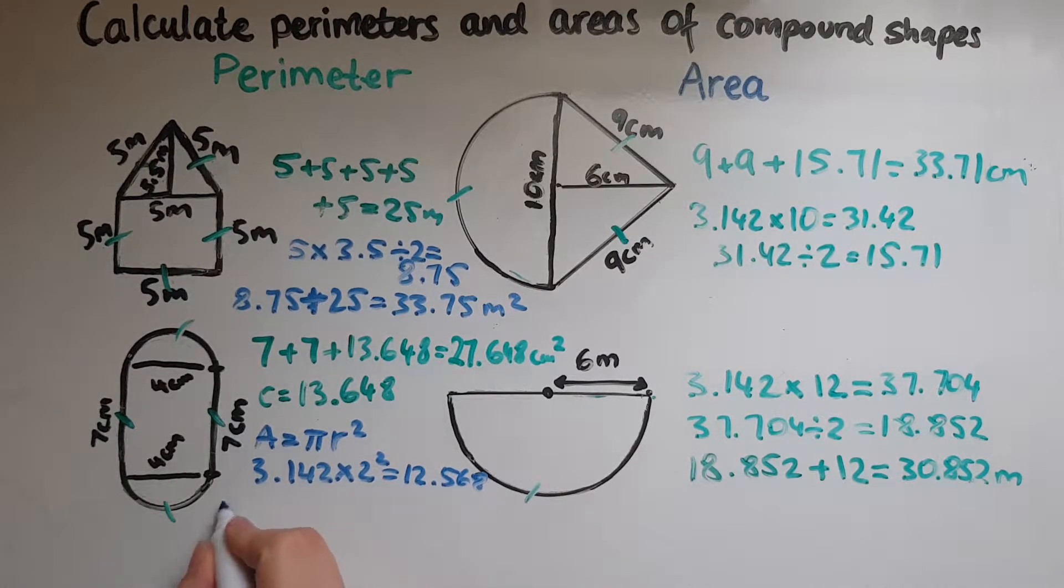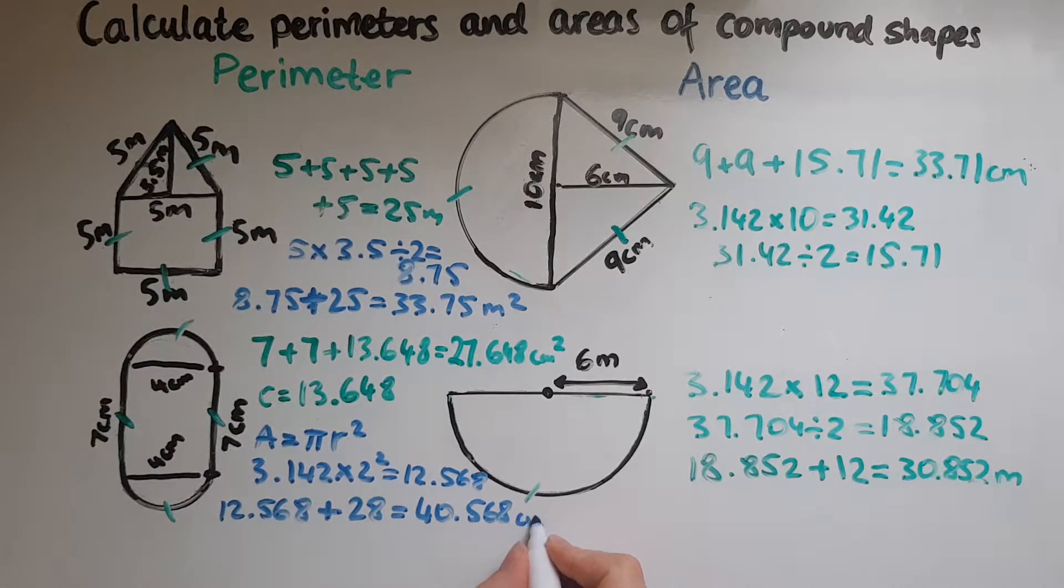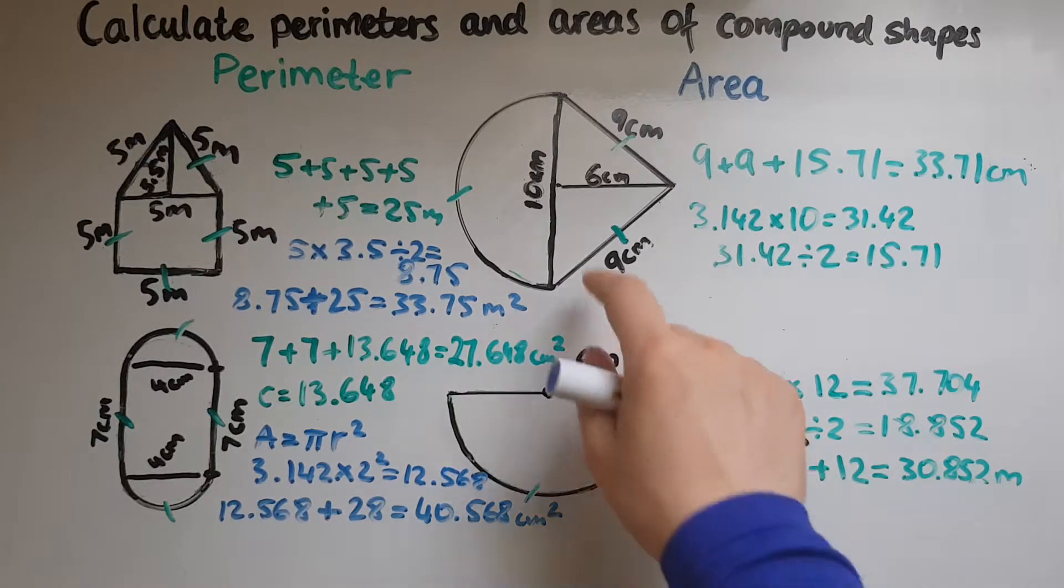Twelve point five six eight, we'll add to that four times seven which is twenty eight. So this is forty point five six eight centimeters squared, that's the area of the whole shape.